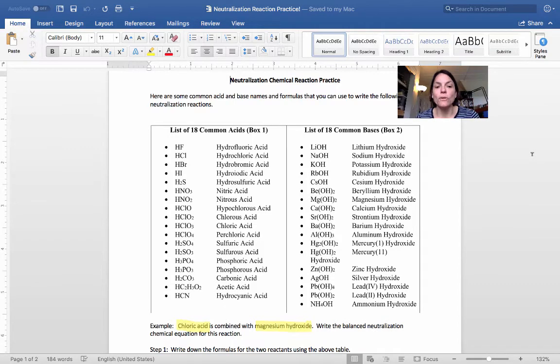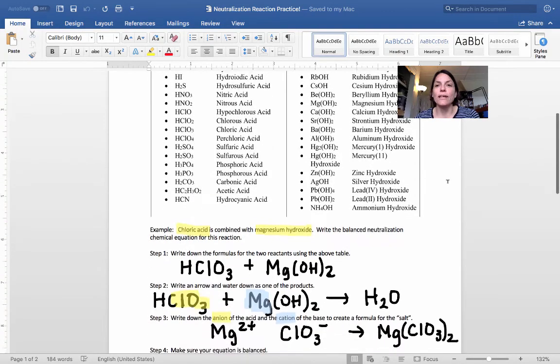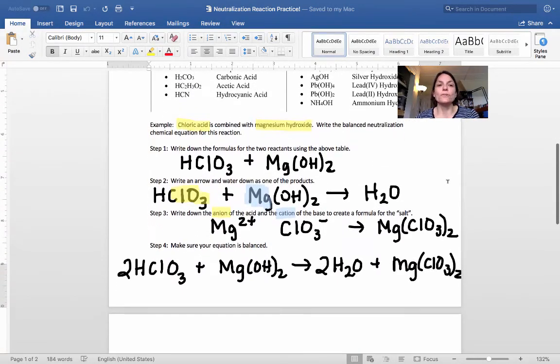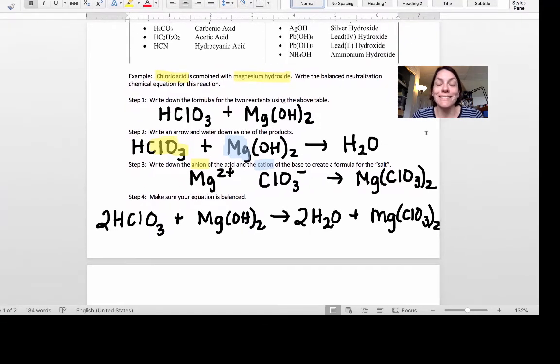We're going to work through a couple of examples together. If you look at the first example here, I already have the work written out for this one. In this example we have chloric acid, which is combined with magnesium hydroxide. We're going to write the balanced neutralization reaction for this reaction.